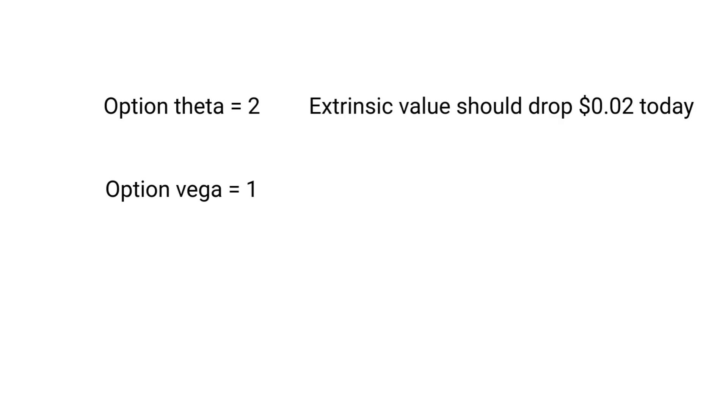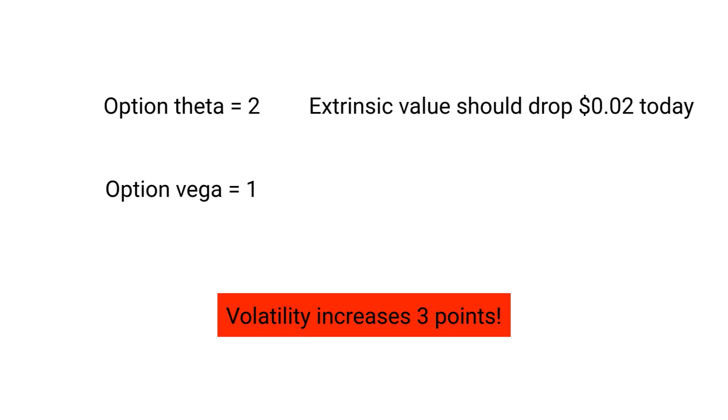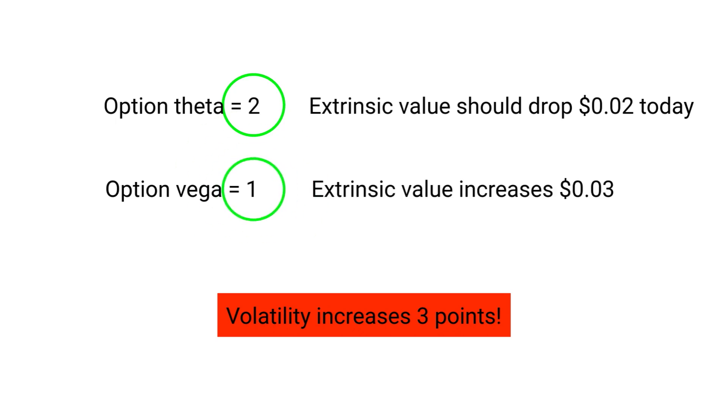For example, if volatility increases, the extrinsic value of an option may actually go up in spite of time decay. Let's say we're looking at an option with a theta of 2 and a vega of 1. Remember, vega measures an option's sensitivity to changes in volatility. Theoretically, this option should lose $0.02 today to time decay. But what if volatility increases by three points? That means that although the option lost $0.02 in extrinsic value to time decay, it gained $0.03 in extrinsic value due to volatility increasing. So although theta is measuring the rate of time decay on an option, it can be impacted by other variables in the option pricing model.